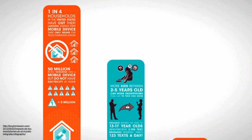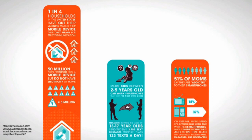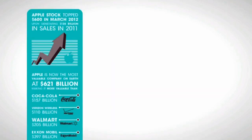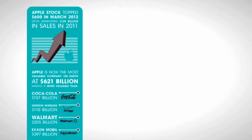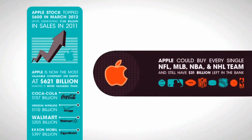That's 123 texts a day. Did you also know that 51% of moms say they're addicted to their smartphones? On average, moms spend 37% of their daily media time with their smartphones, which is double that spent on TV and more than any other media, including radio, magazines, and newspapers. Apple's stock topped $600 in March of 2012, generating $128 billion in sales in 2011. Apple is now the most valuable company on Earth at $621 billion, making it more valuable than Coca-Cola, Verizon, Walmart, or ExxonMobil. Apple could buy every single NFL, MLB, NBA, and NHL team and still have $31 billion left in the bank.